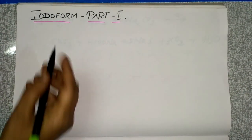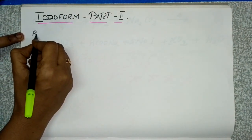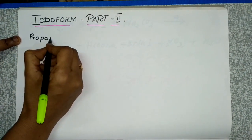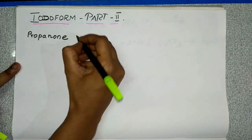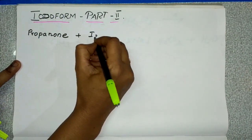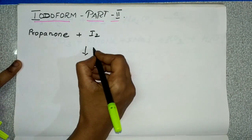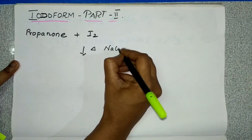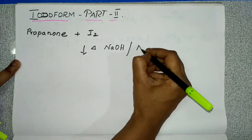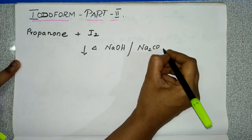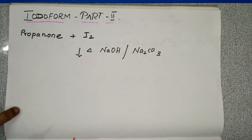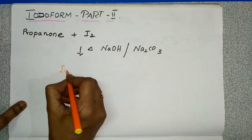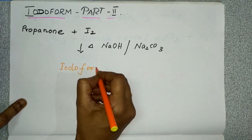Here, you are going to take propanone. Propanone with iodine, you are going to heat it in the presence of sodium hydroxide or sodium carbonate. Then, you will get iodoform.